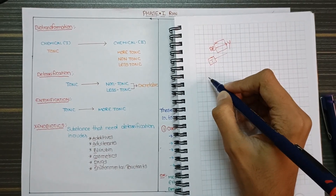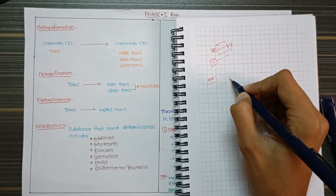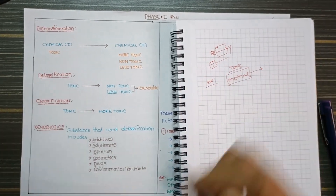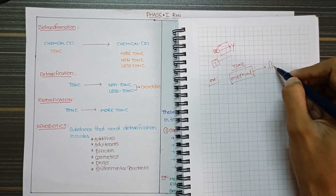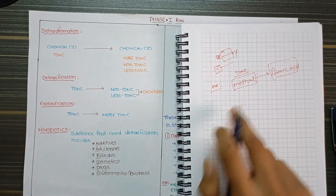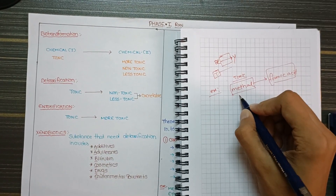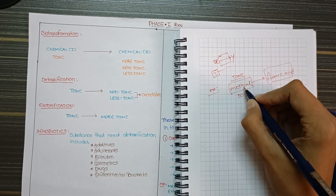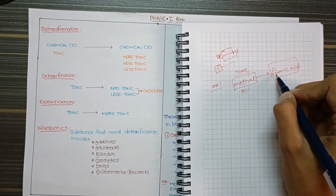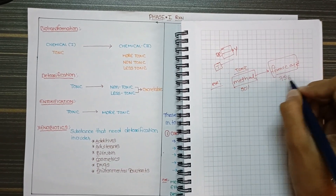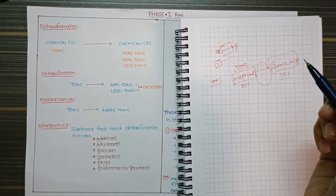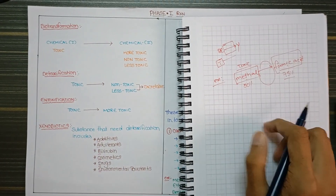For example, take methanol. Methanol is already toxic. Methanol is converted into formic acid. Formic acid is more toxic than methanol — this formic acid is 25% more toxic than methanol. So in this intoxication reaction, methanol is converted to formic acid. This is an example of intoxication.